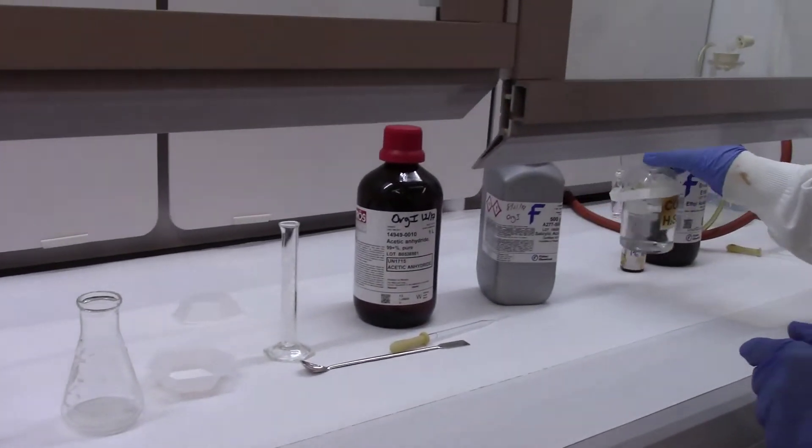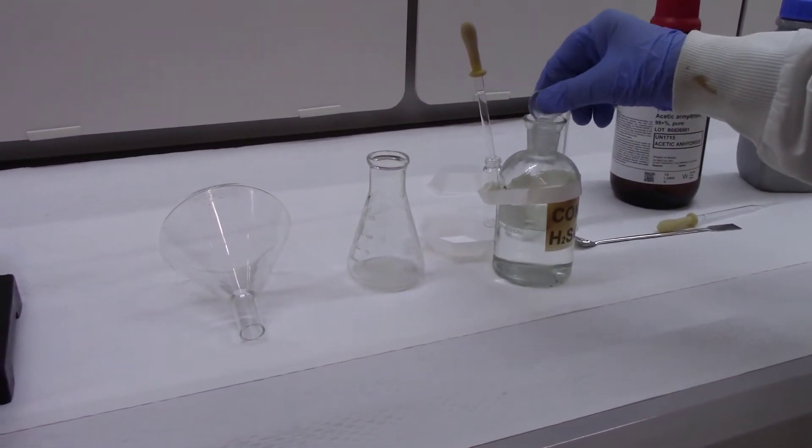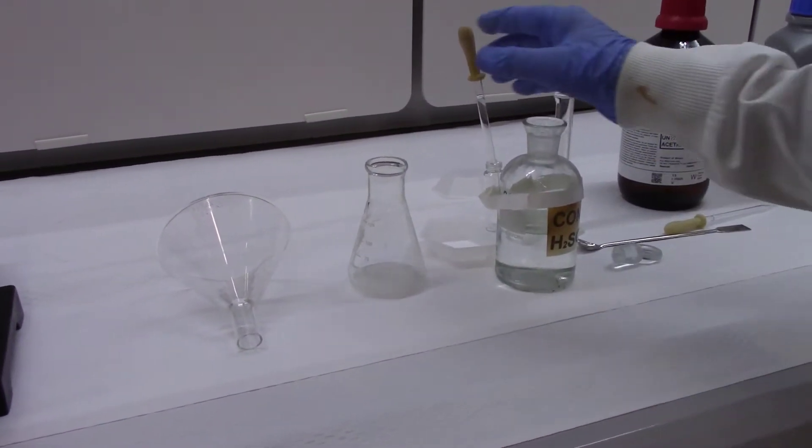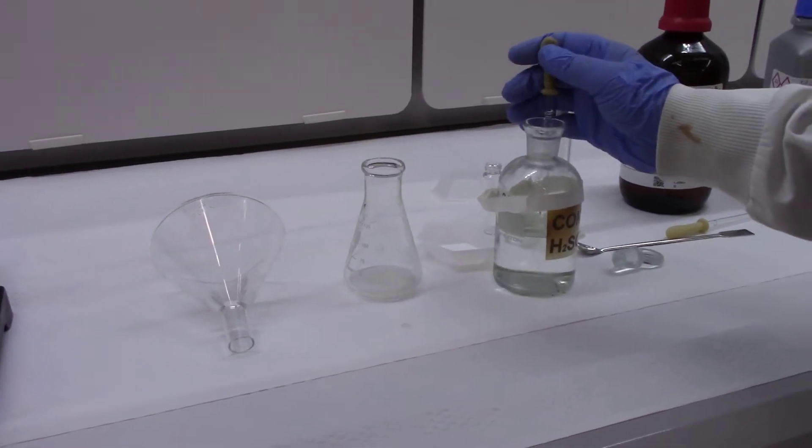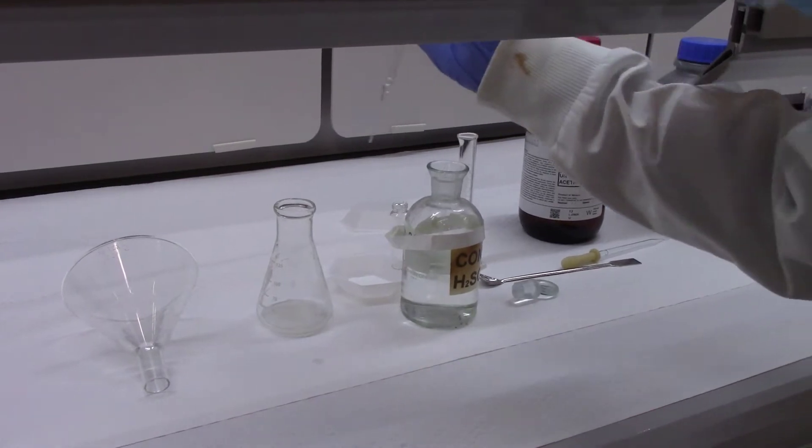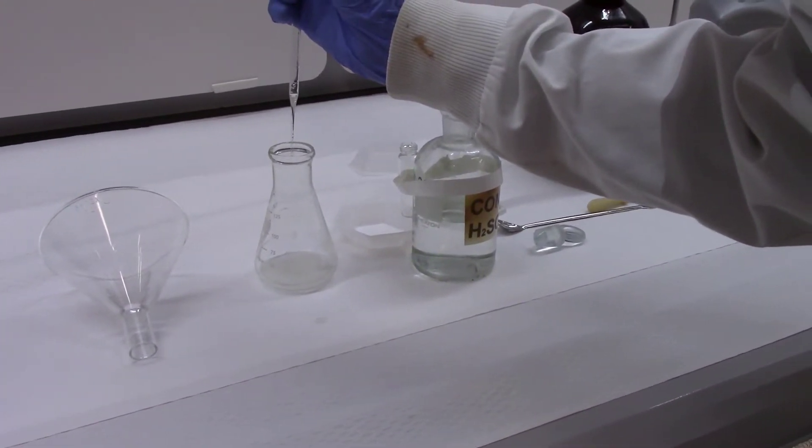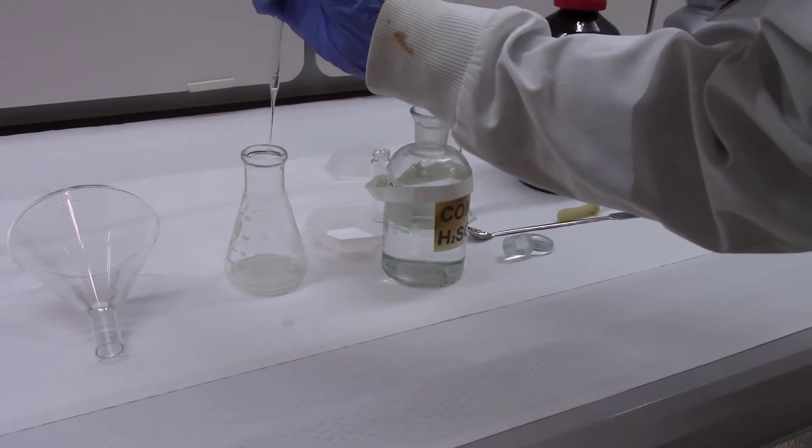The addition has to be portion-wise but it doesn't have to be very slow. Once you have finished adding it, now you have to add the catalyst, sulfuric acid. Be careful about sulfuric acid. Always wear gloves. You add five drops of it. Sulfuric acid is highly corrosive, it's a very dangerous chemical. You need to be very aware of that.